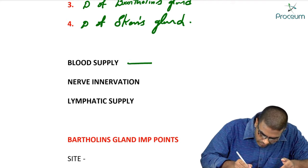The lower one-third of the posterior vaginal wall is in relation with the perineal body. To summarize posteriorly: upper one-third — pouch of Douglas, middle one-third — ampulla of rectum, lower one-third — perineal body.